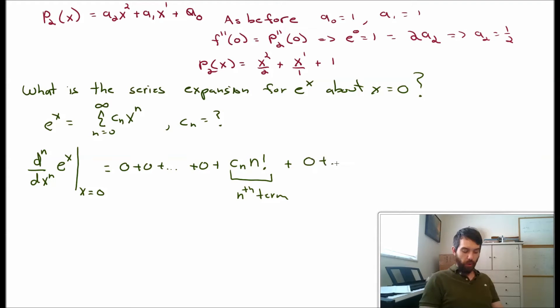all of those are going to equal 0. So it's just a bunch more 0s. In other words, this is just cn times n factorial.